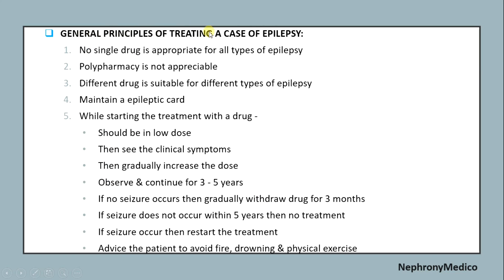General principles of treating epilepsy: no single drug is appropriate for all types of epilepsy. Polypharmacy is not preferable. Different drugs are suitable for different types of epilepsy. Maintain an epileptic card. When starting treatment, begin with a low dose, observe clinical symptoms, then gradually increase the dose. Continue for three to five years. If no seizure occurs, gradually withdraw the drug over three months. If seizures do not occur within five years, no further treatment is needed. If seizures recur, restart the treatment.